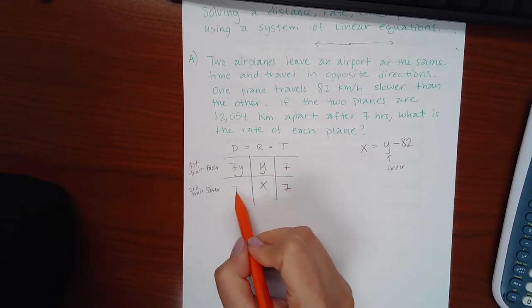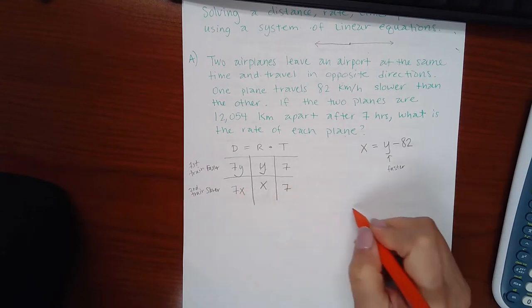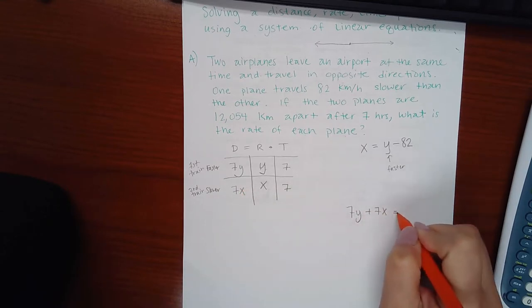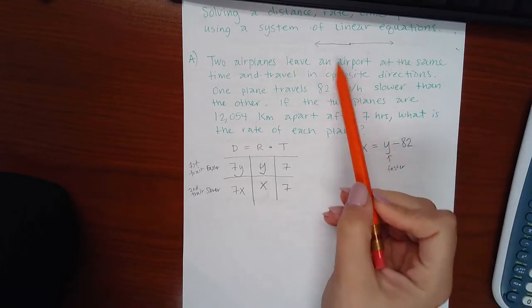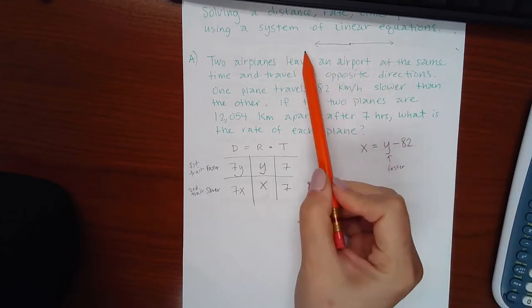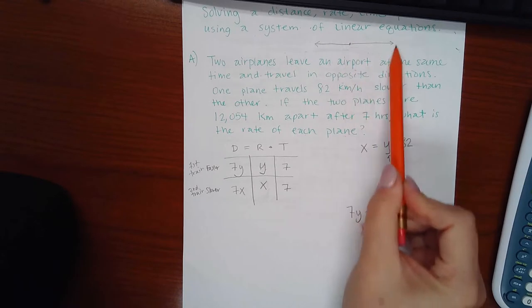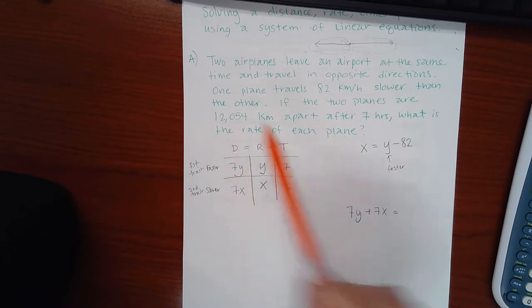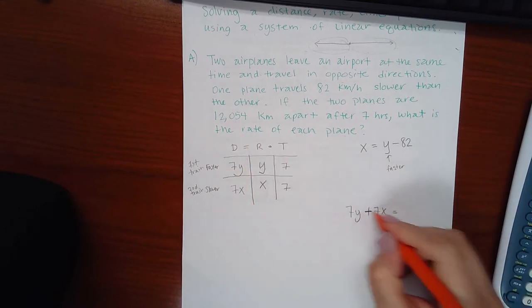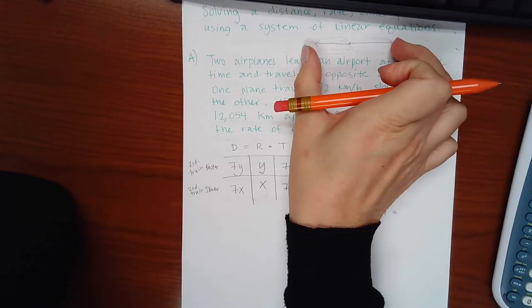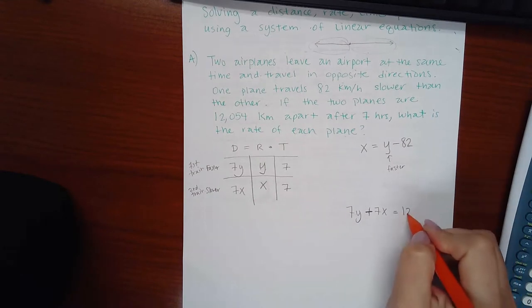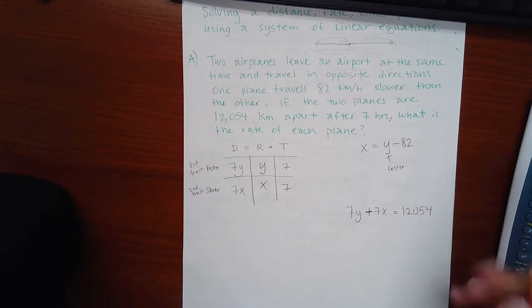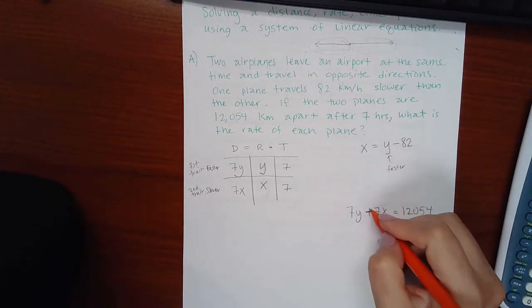The rate times the time, which means 7x for this one. So I know that 7y plus 7x should equal the total distance. One plane is going in this direction. One plane is going in that direction. I have that distance and I have that distance in expressions. But I do know the total distance, if I add those two numbers together, the total distance they'll be apart is 12054. So there's my system of equations.